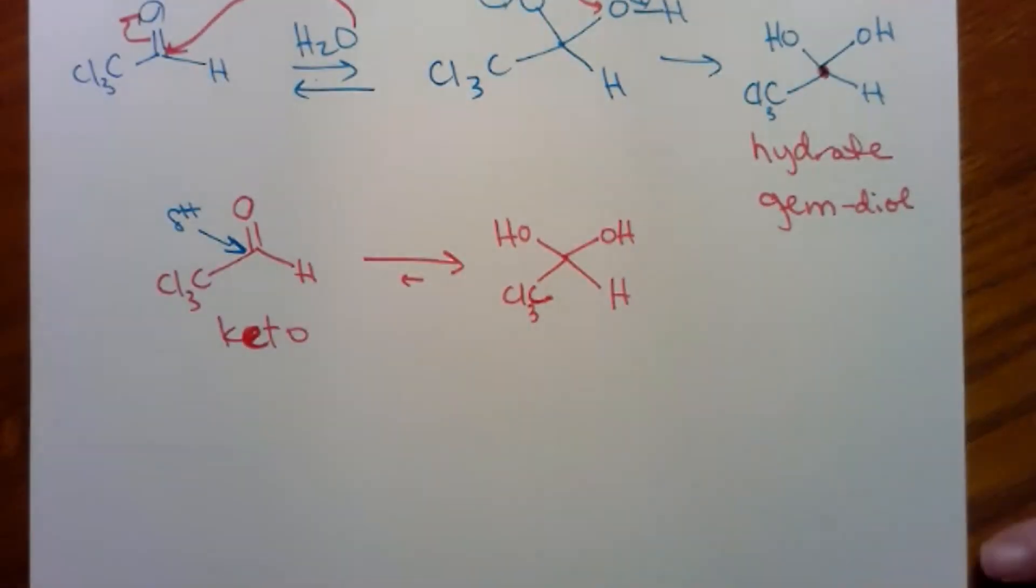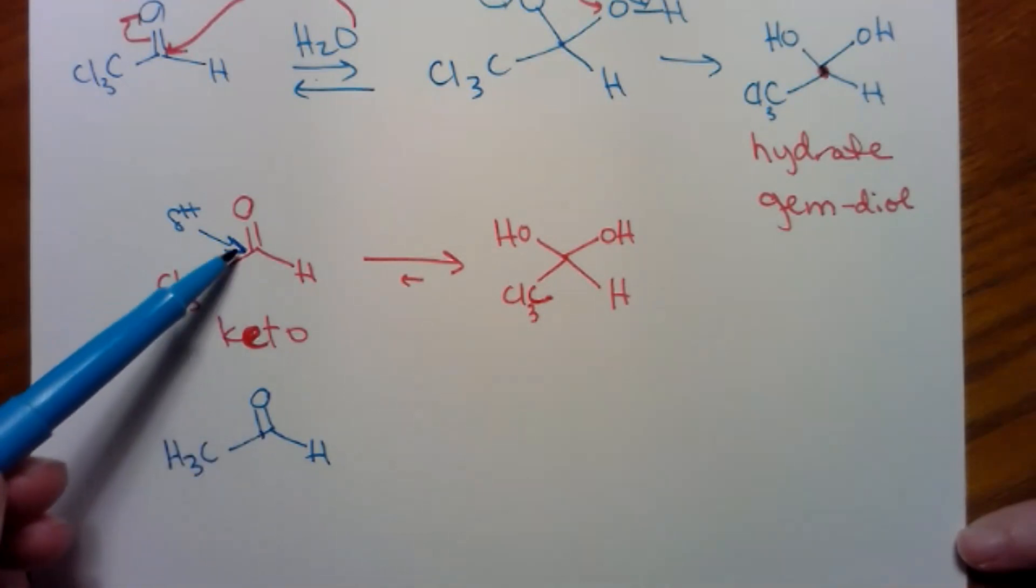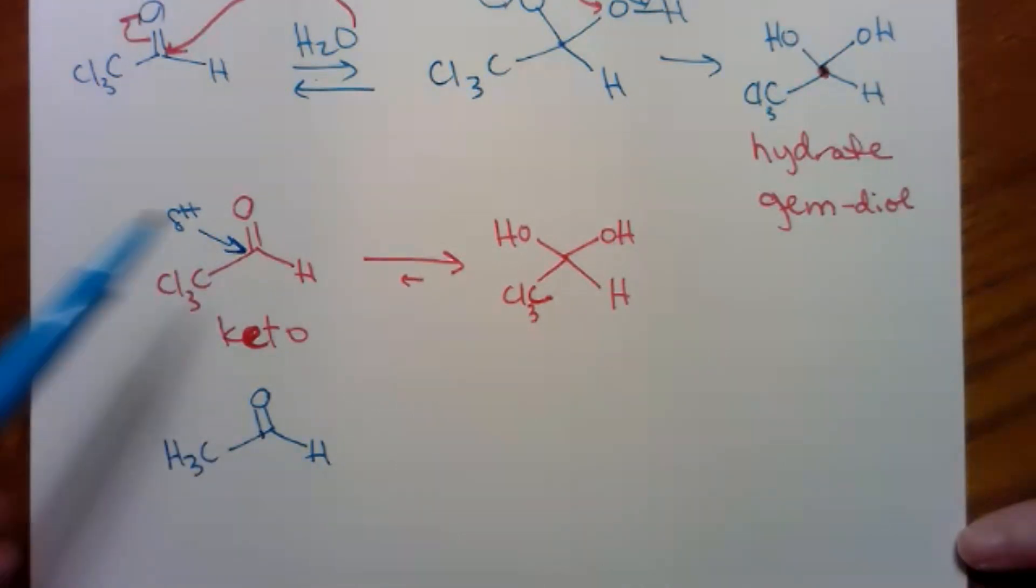If I were comparing a CH3 aldehyde to this CCl3 aldehyde, and I were asked the question, which one of these has the greatest percent hydrate at equilibrium, what you need to do is judge which one has the greater partial positive on the carbonyl carbon. The greater partial positive means the greater percent hydrate at equilibrium. So, this one has the greater percent hydrate at equilibrium.